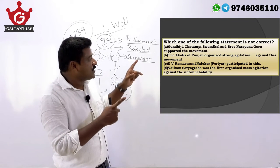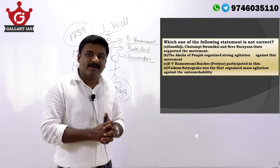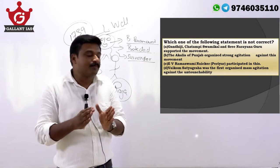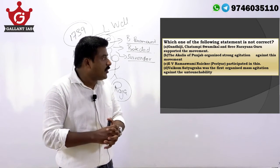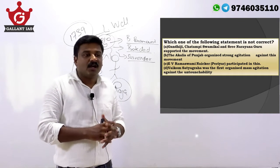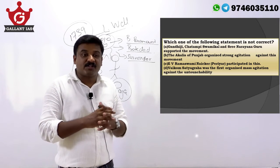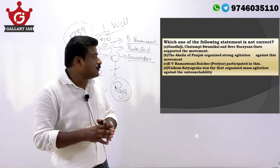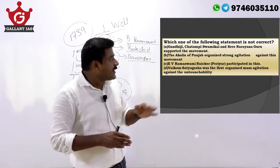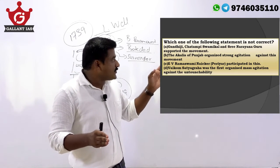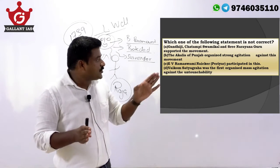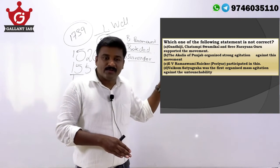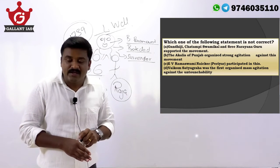Question: which one is NOT correct regarding Vaikom Satyagraha? Statement A — Gandhiji, Chattambi Swami, Sri Narayana Guru supported this movement — true. Statement B — Akalis of Punjab organized a strong agitation AGAINST this movement — wrong, the Akalis of Punjab actually SUPPORTED the movement. Statement C — EV Ramaswami Nayakar Periyar supported this movement — true. Statement D — Vaikom Satyagraha was the first ever organized agitation against untouchability in India — true. The not-correct statement is B.